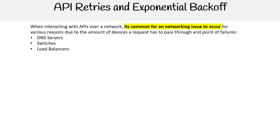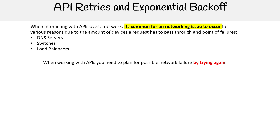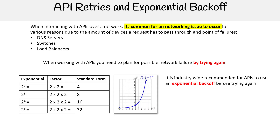When working with APIs, you need to plan for possible network failure by trying again — basically sending the request another time. It is an industry-wide recommendation when working with APIs to use exponential backoff before trying again.